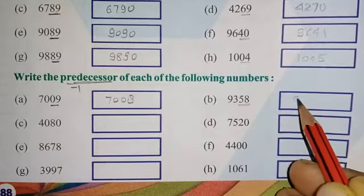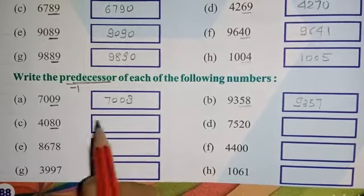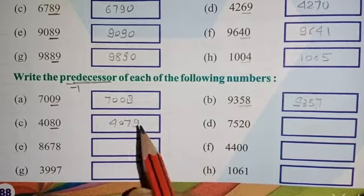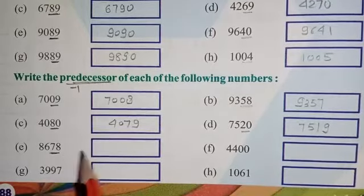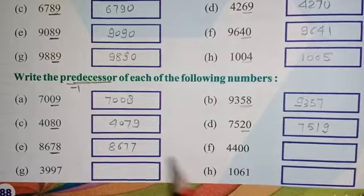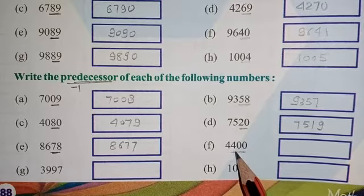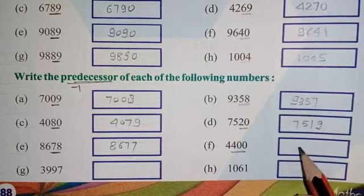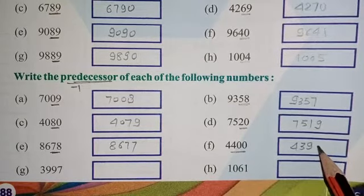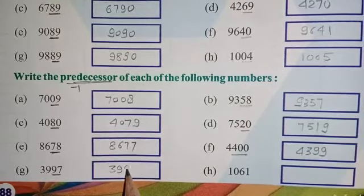Next number: last two digits are 58 — just before 58 in counting is 57. For 80, just before is 79. For 20, before is 19. For 78, before is 77. If the last two digits are double zero (00), take three digits — the number becomes 400, and just before 400 is 399. For 97, before is 96. For 61, before is 60.